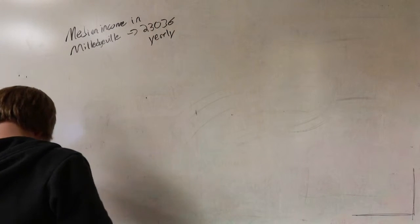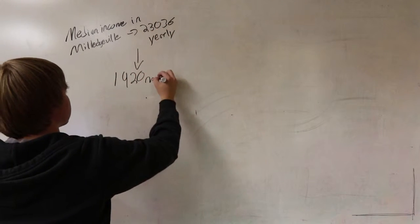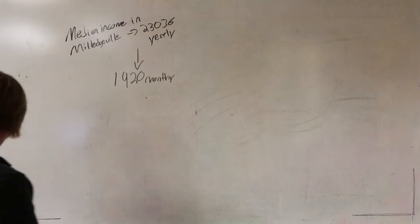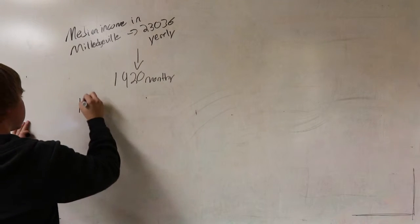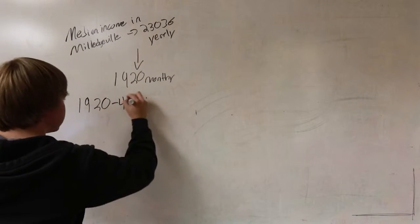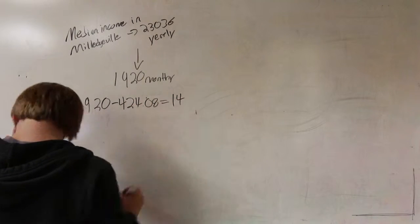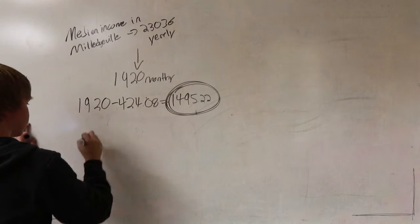Some people might place a lot of worth in peace of mind, but in Milledgeville, where the median income is a little over $23,000 a year, buying organic costs $424, leaving you with about $1,500 left.